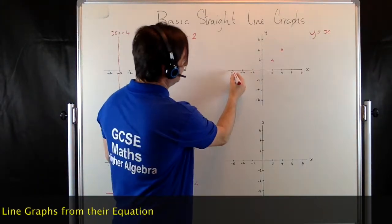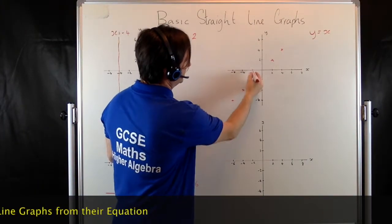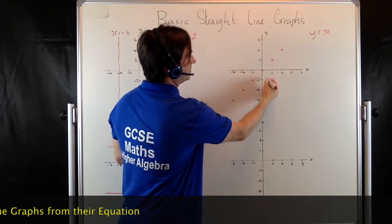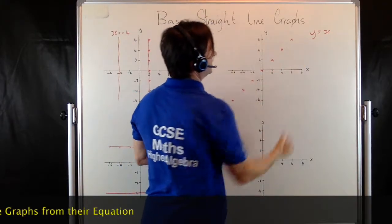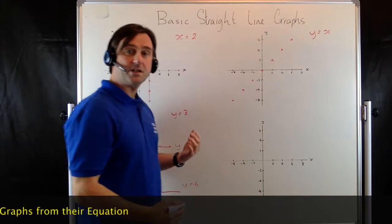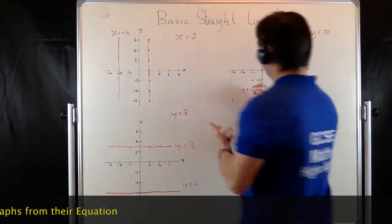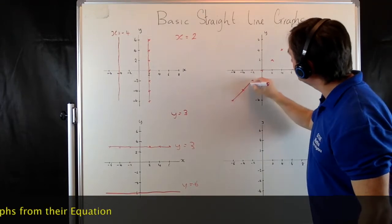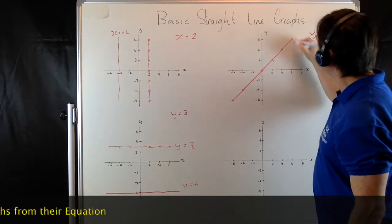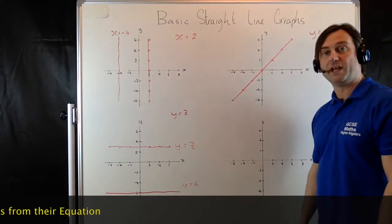So we could plot all these points: minus 6, minus 6; minus 2, minus 2; 0, 0; and 6, 6. So our line is going to be a diagonal line going at 45 degrees. So it's going to go up the page. There's our graph of y equals x.